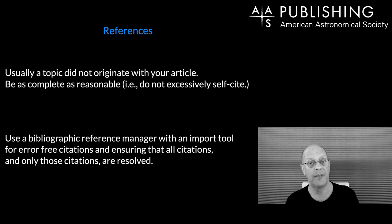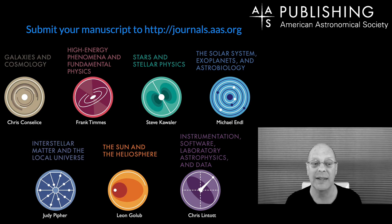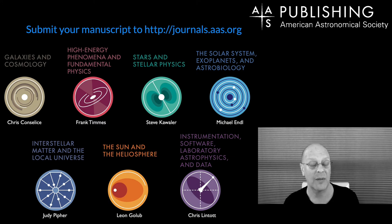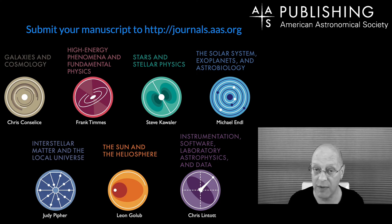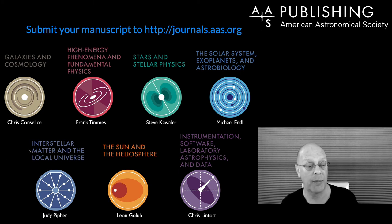Once your manuscript is ready and submitted, you'll be asked which corridor it goes down. There are currently seven corridors: Galaxies and Cosmology, High Energy Phenomena and Fundamental Physics, Stars and Stellar Physics, Solar System/Exoplanets/Astrobiology, Interstellar Matter in the Local Universe, the Sun and the Heliosphere, and Instrumentation/Software/Laboratory Astrophysics/Data. Articles can cross corridors and will be moved as appropriate, but you must pick one when you first submit.